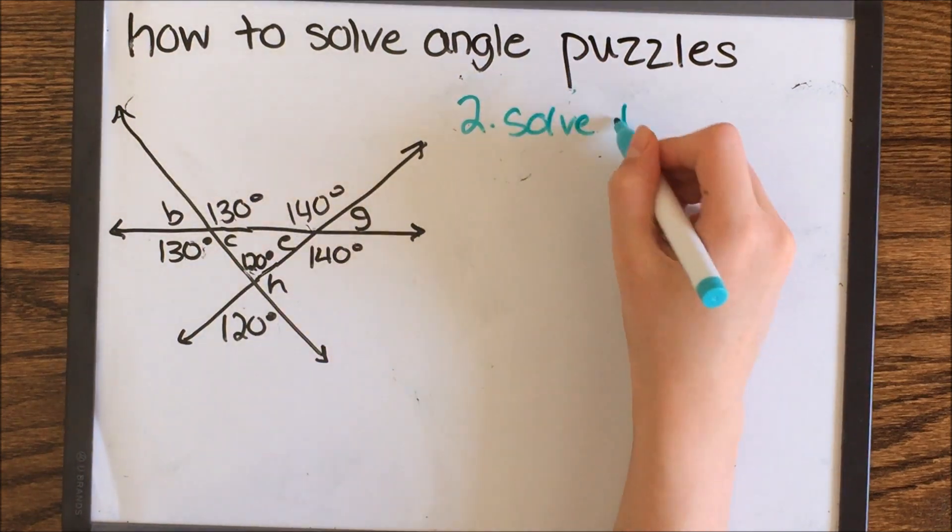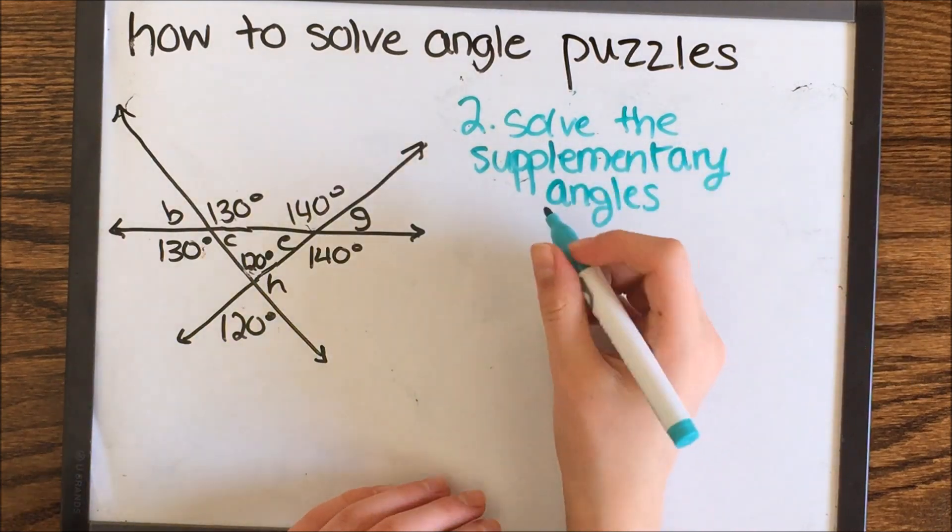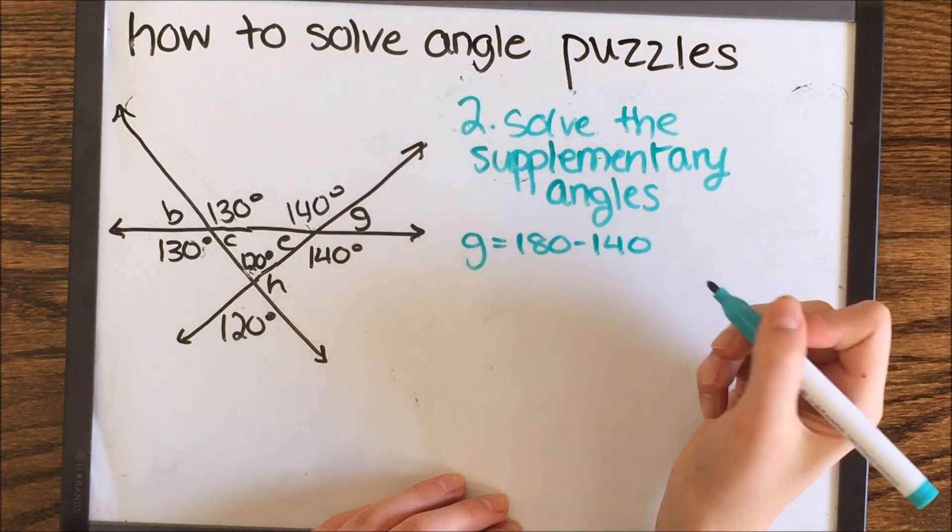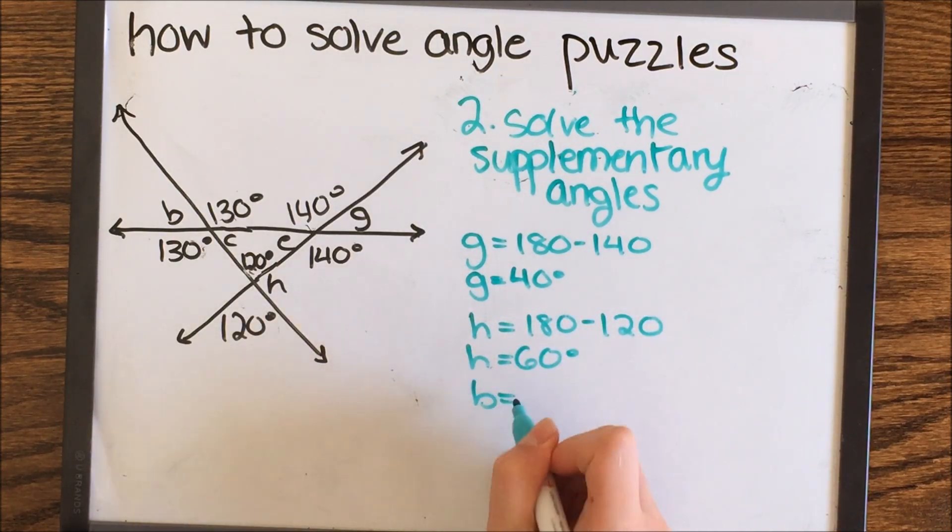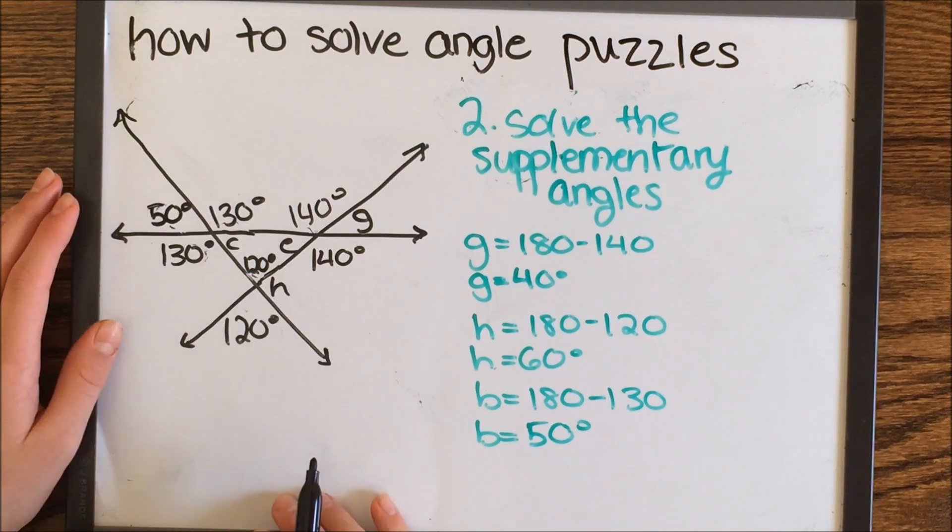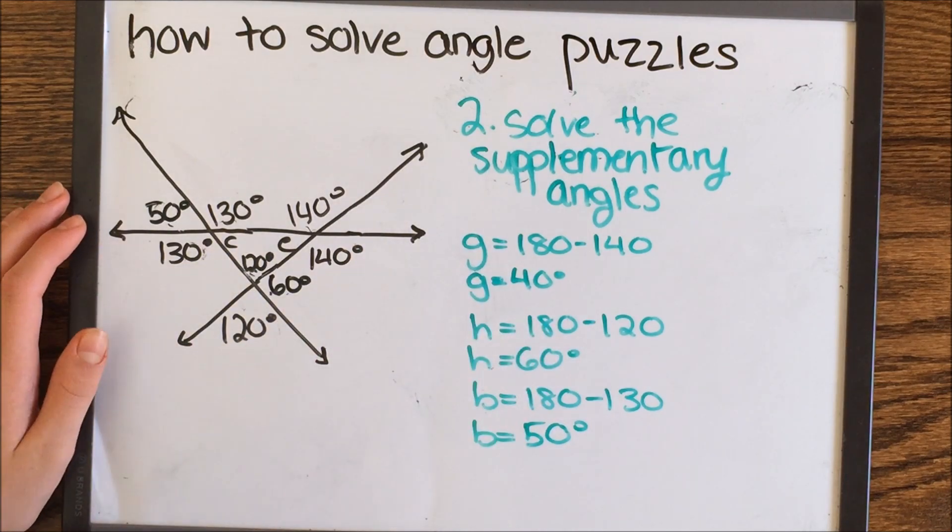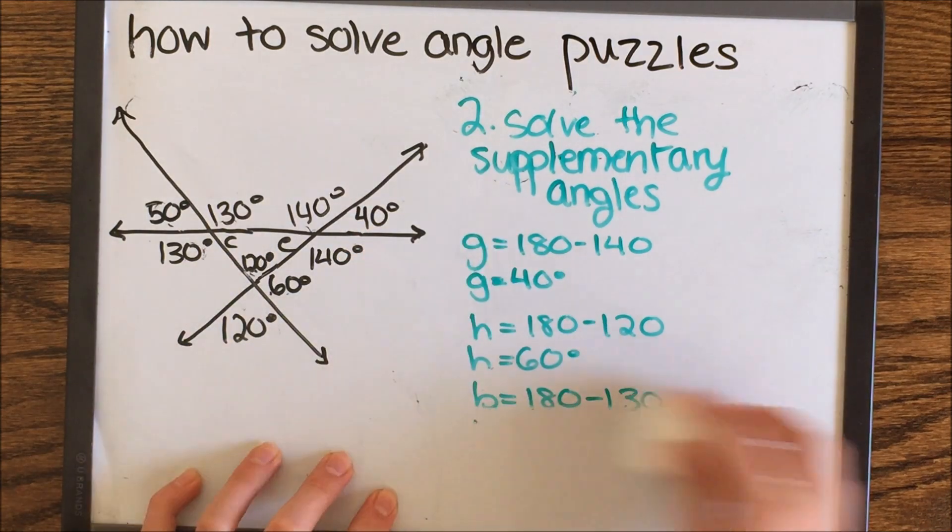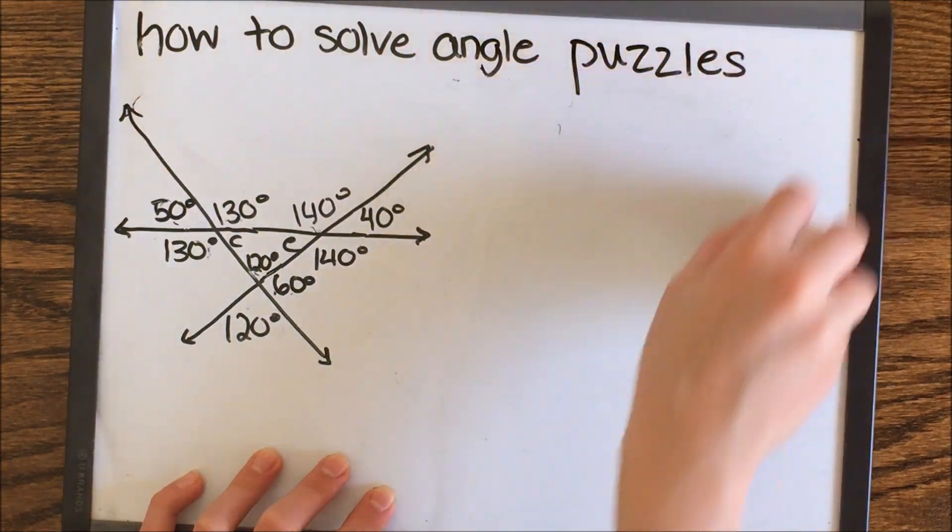The second step is to solve all the supplementary angles. These are going to be a little more complicated. How to solve supplementary angles is to subtract the angle that you know from 180, and that equals the angle that you don't know. To solve complementary angles, you do the same thing but subtract the angle that you already know from 90 degrees, because a right angle is 90 degrees.